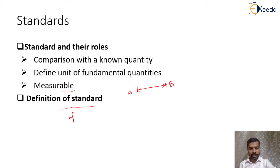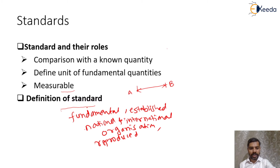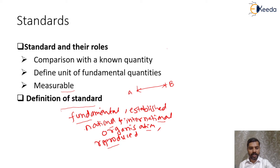A standard is any fundamental quantity which has a known value and is established by national and international organizations of authority. It should also be easily reproduced. So the three key points are: it should be a fundamental value of any known physical quantity, it has to be established nationally and internationally by different organizations, and it should be easily reproduced.